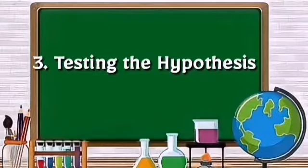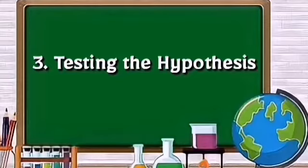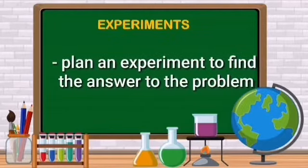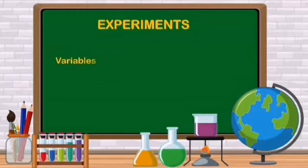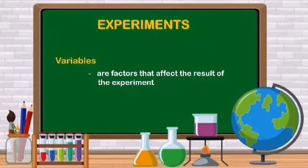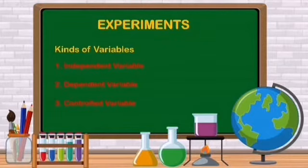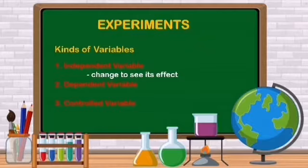Now that we have a hypothesis, it is time to test it. To verify a hypothesis, you must conduct a series of tests called experiments. You must plan an experiment to find the answer to the problem. In a well-planned experiment, variables must be determined. Variables are factors that affect the results of the experiment. There are three kinds of variables: the independent variable, the dependent variable, and the controlled variables. The variable that is changed in the experiment to see its effect is the independent variable. The dependent variable is the factor being affected by the independent variable. The controlled variables stay the same all throughout the experiment.